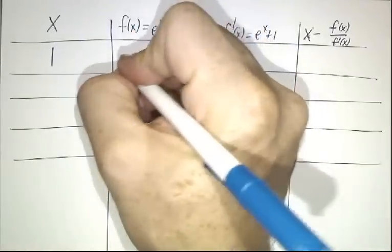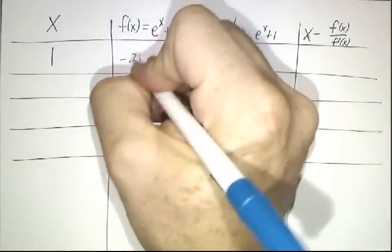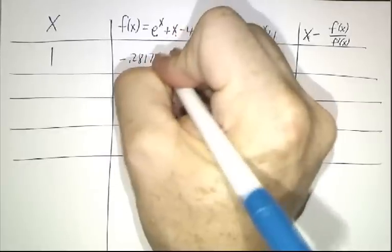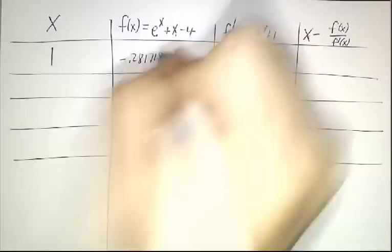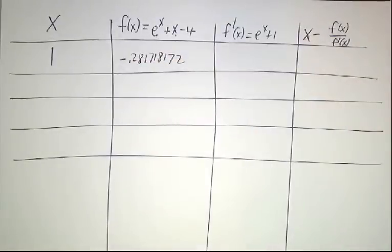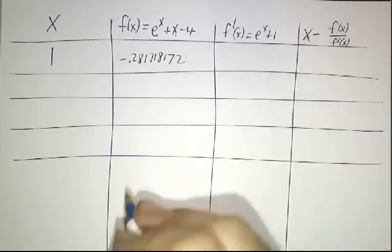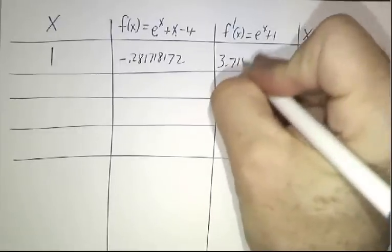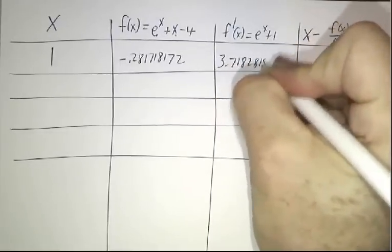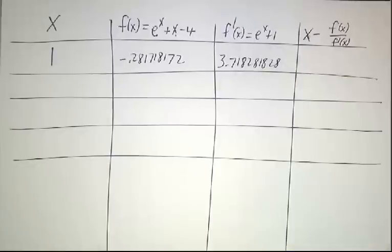In fact, f of x winds up being minus 0.281718172. And in case you're wondering, yes, I am using a calculator to figure out these numbers. Our derivative winds up being 3.718281828. That's e plus 1.